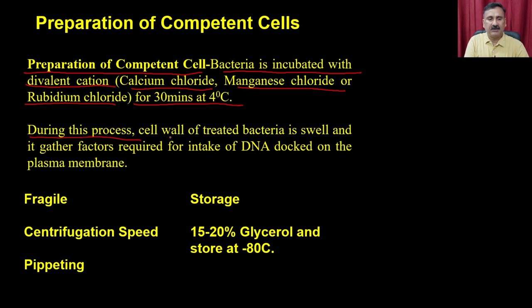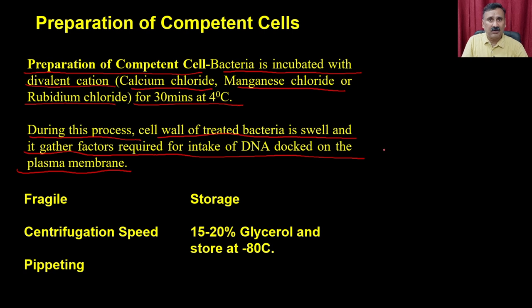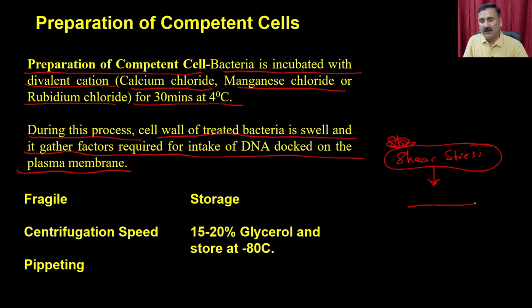During CaCl2 treatment, the divalent cations make the cells a little fragile. You must handle these cells carefully because they are susceptible to any kind of shear stress — meaning the friction generated when two layers rub against each other. For example, spinning them at very high centrifuge speed will likely lyse the cells. Similarly, vigorous pipetting with thin bore tips will destroy the cells. So these competent cells are very fragile — you cannot centrifuge them at high speeds or pipet aggressively.